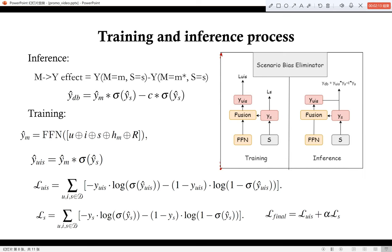Here is our training and inference process. When training, we model these two impacts and disentangle them. While in the inference stage, we use counterfactual debiasing mechanism to eliminate the bias.